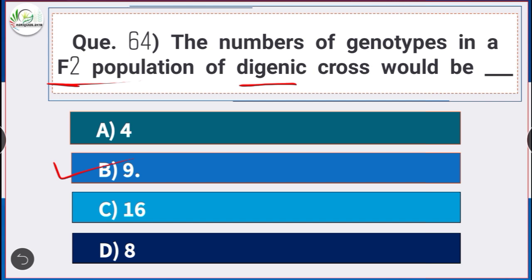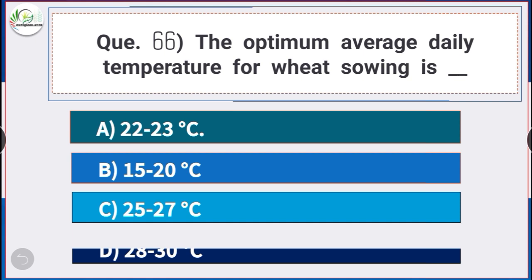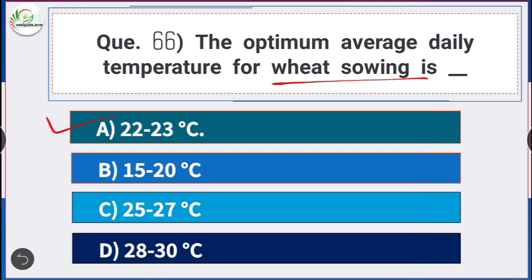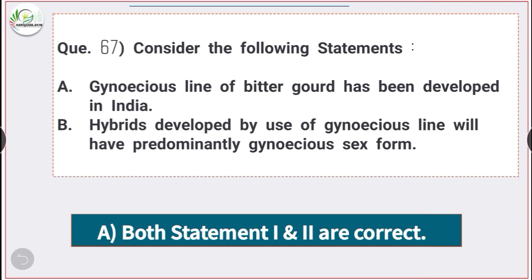Question number 66: The optimum average daily temperature for wheat sowing is — answer option E — 22 to 23 degrees Celsius. Question number 67: Consider the following statements. Statement A: Gynoecious line of bitter gourd has been developed in India.